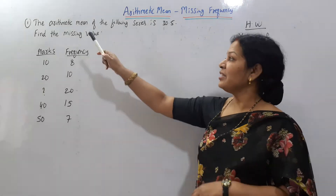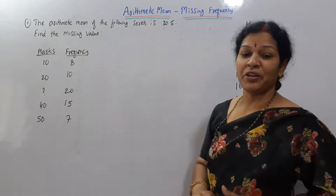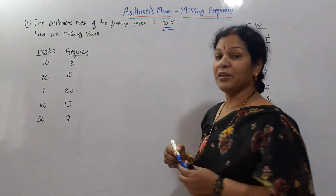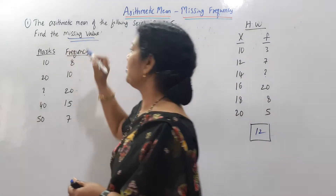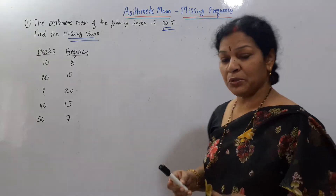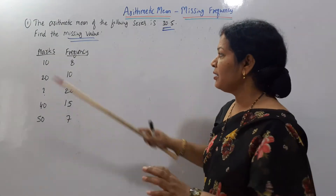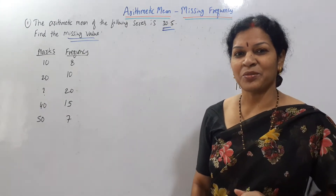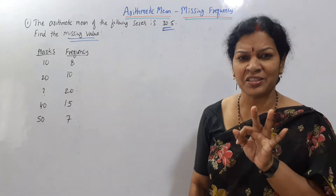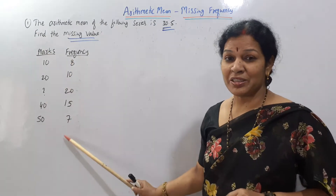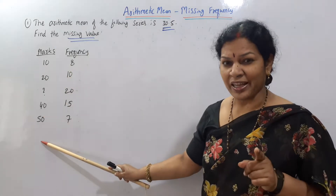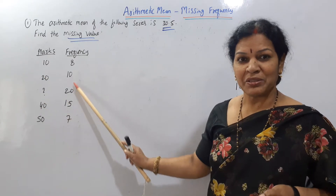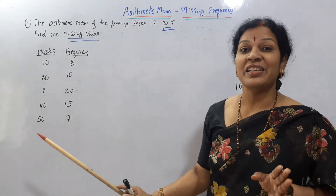This is the problem given to us: the arithmetic mean of the following series is 30.5. The arithmetic mean value is given as 30.5. We have to find the missing value. What is given to us? Marks and frequency. Now, what type of series is this — individual, discrete, or continuous? Marks are given and frequency is given. The marks are not in class intervals, just one number each, so it is a discrete series.